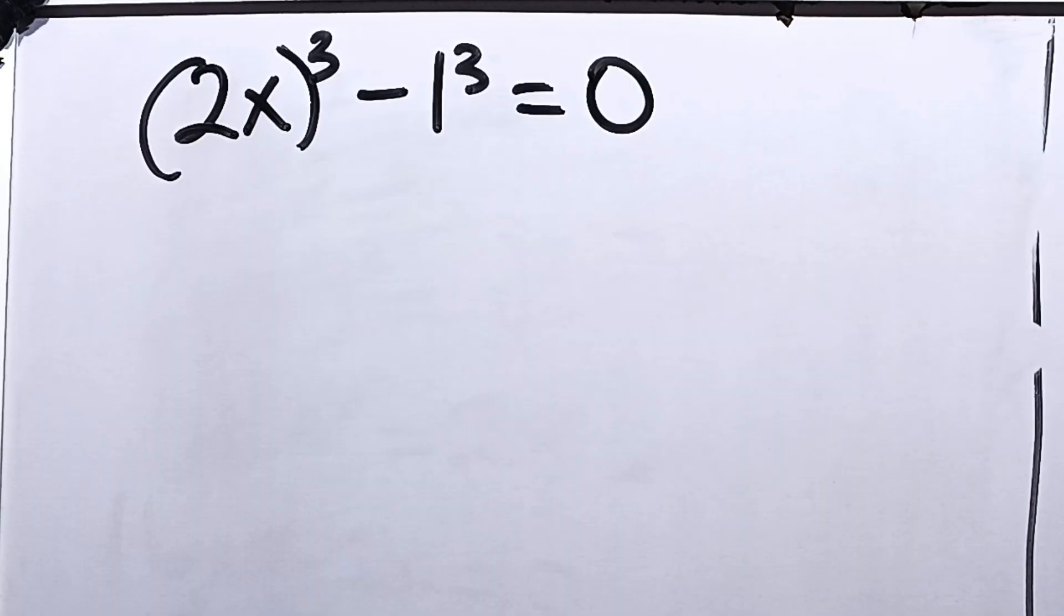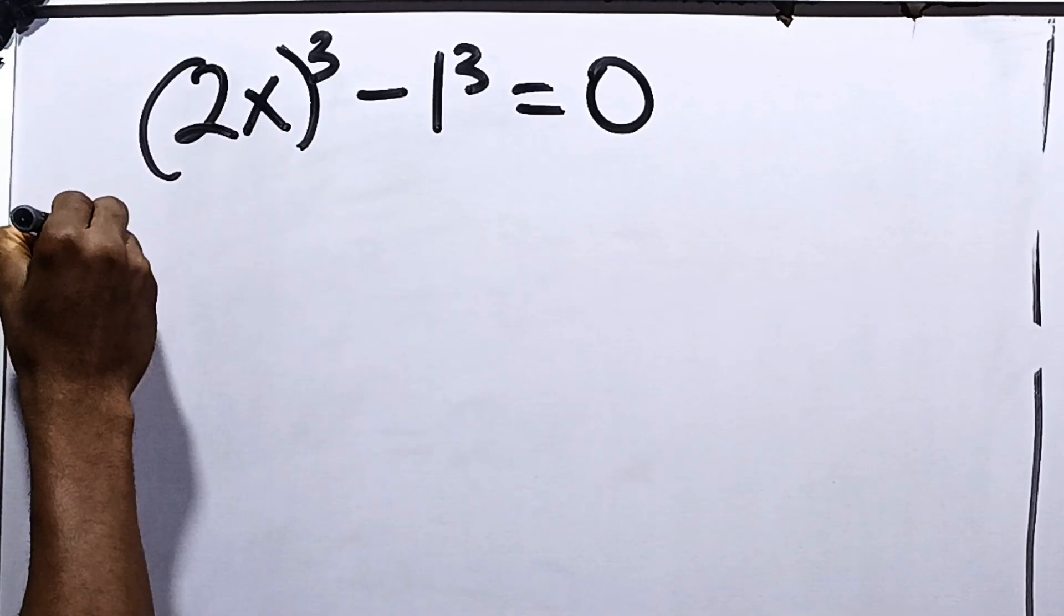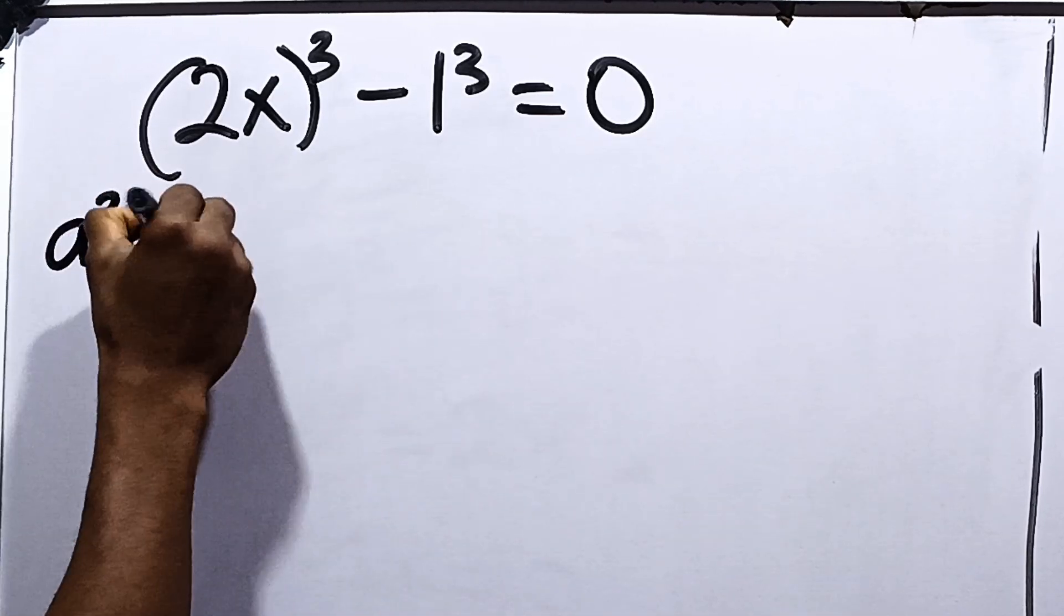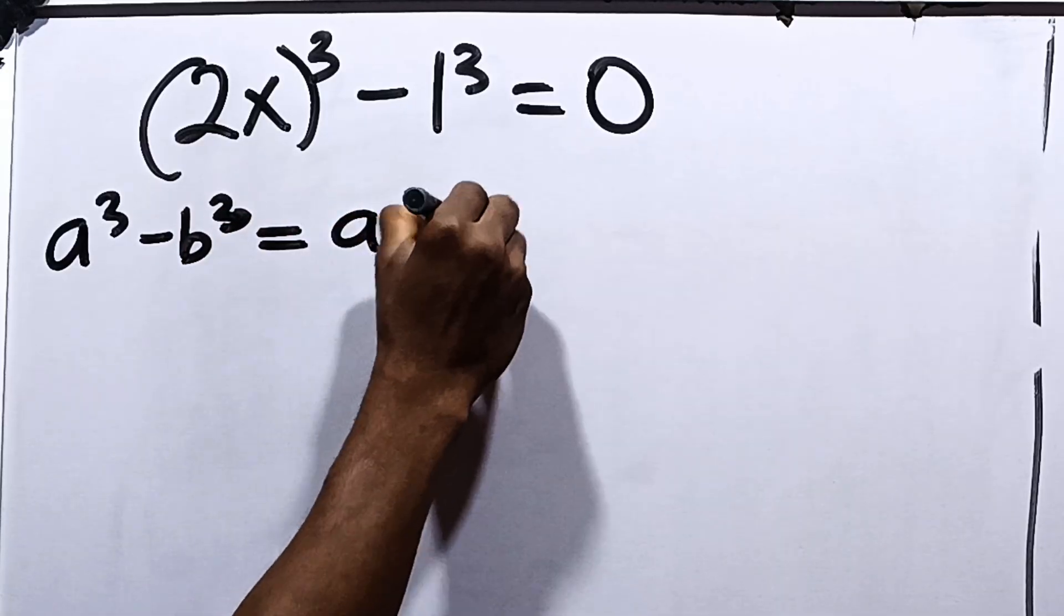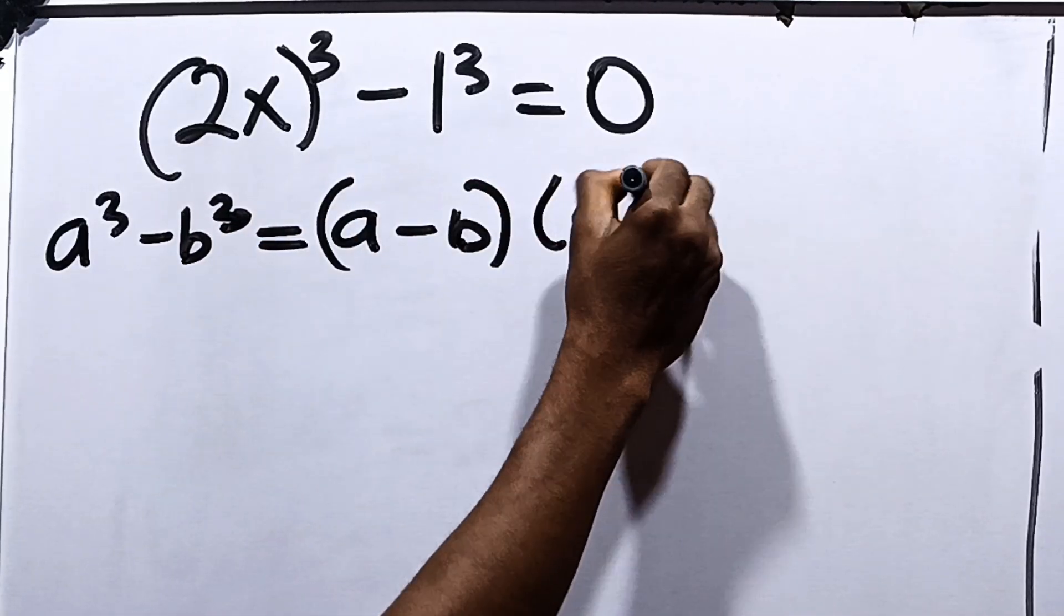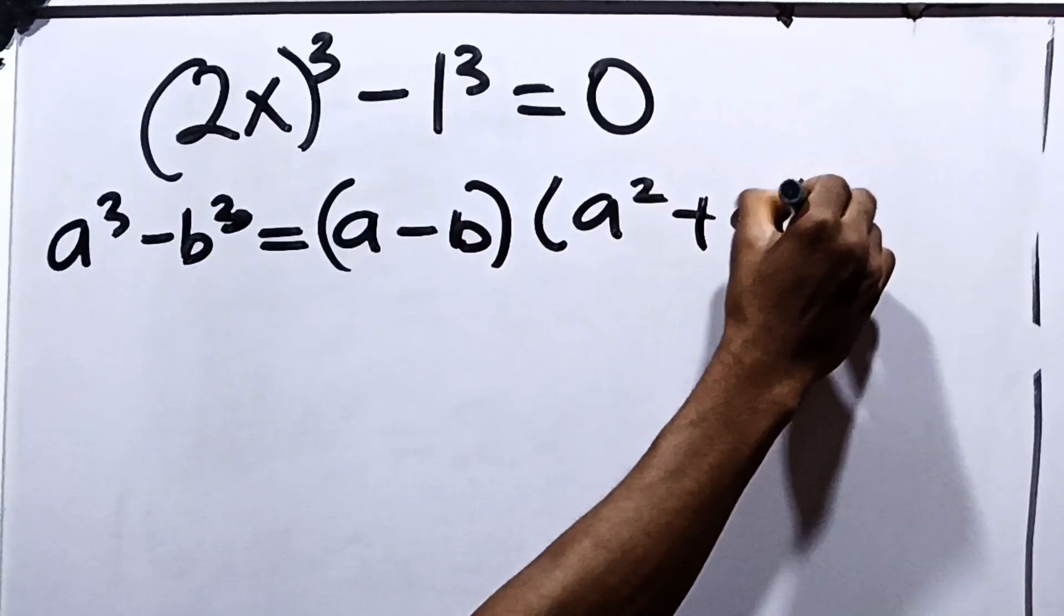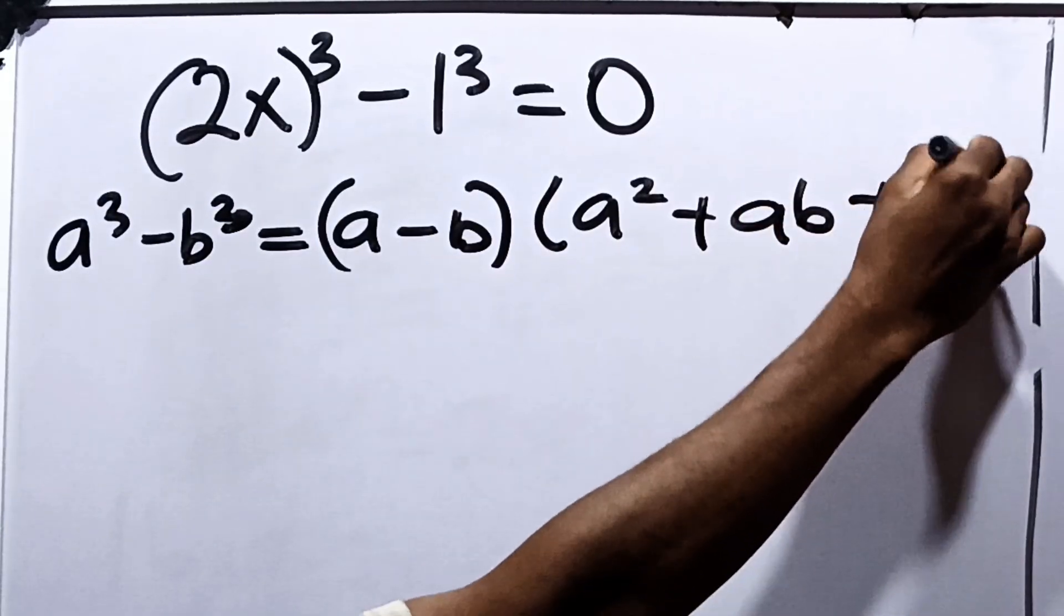Now moving on from here, we can say that this is the difference of 2 cubes. And the difference of 2 cubes says that if you have a cubed minus b cubed, it's equal to a minus b multiplied by a squared plus ab plus b squared.